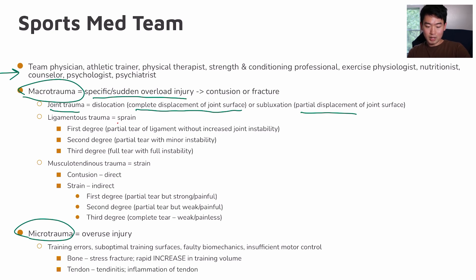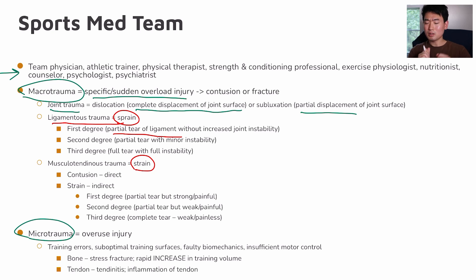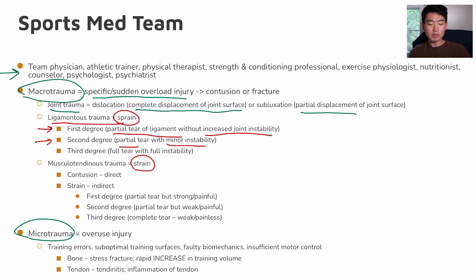Taking a look at sprain versus strain: ligaments usually get sprained and muscles tend to get strained. For ligament sprains, there's first, second, and third degree. First degree is a partial tear of the ligament without increased joint instability. Second degree has a minor instability and is still a partial tear. Third degree ligament sprain is a full tear with full instability.